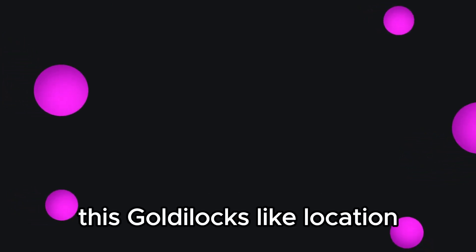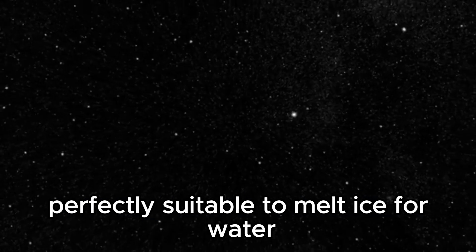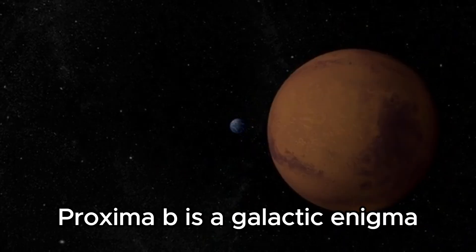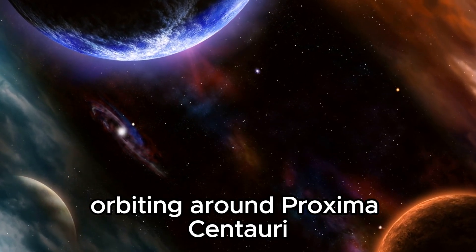This Goldilocks-like location offers a delicate balance of light intensity, perfectly suitable to melt ice for water and potentially sustain the seeds of life. Proxima b is a galactic enigma orbiting around Proxima Centauri,